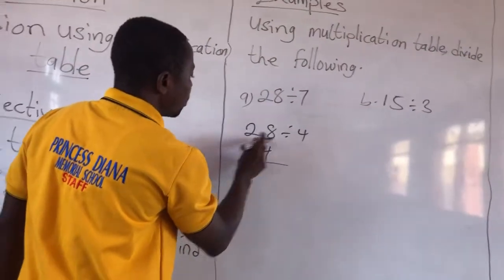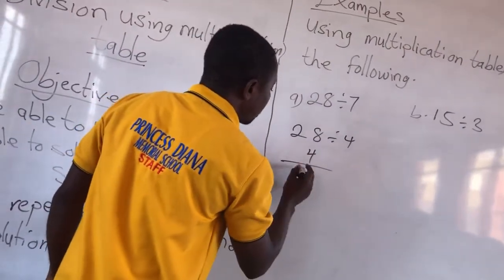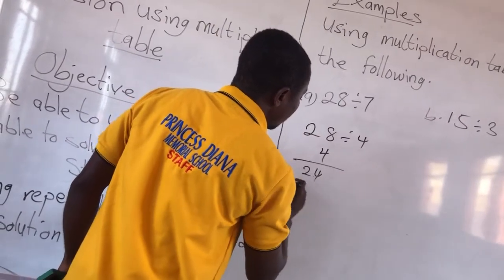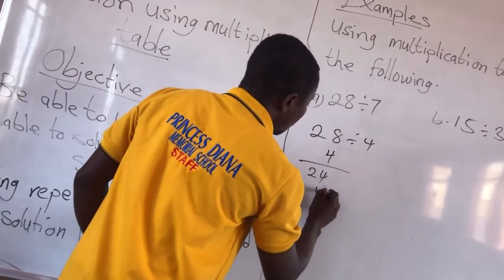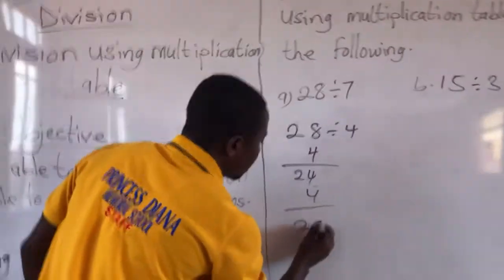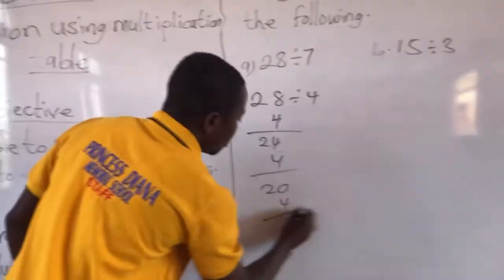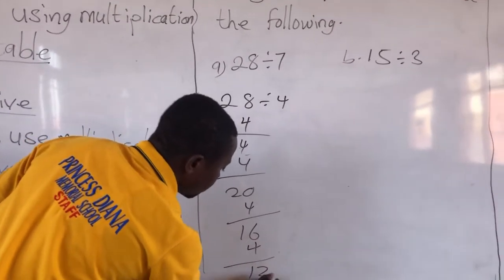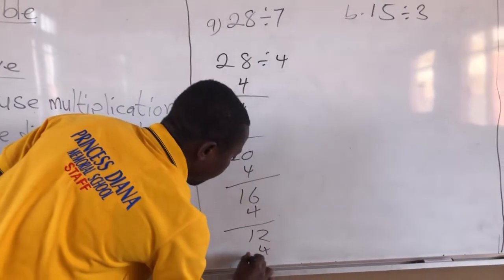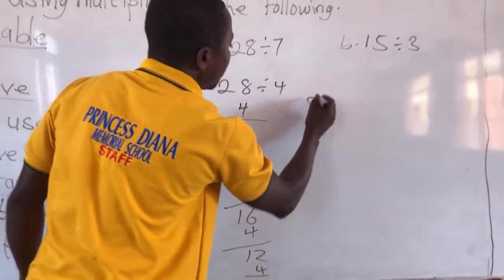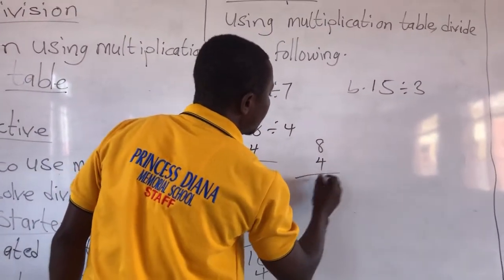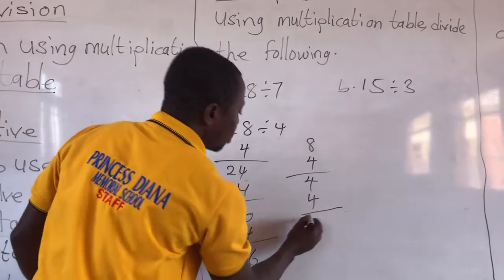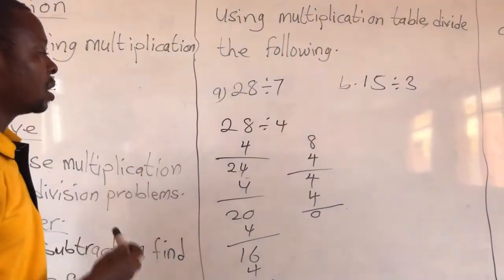So 28 minus 4 gives us 24. Then we subtract 4 from 24 to give us 20. We subtract 4 from 20 to give us 16. We subtract 4 from 16 to give us 12. Then we subtract 4 from 12 to give us 8. Then we subtract 4 from 8 to give us 4. Then we subtract 4 from 4 to give us 0.